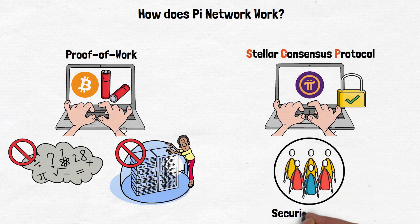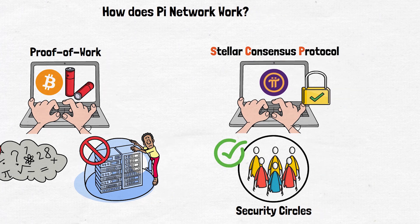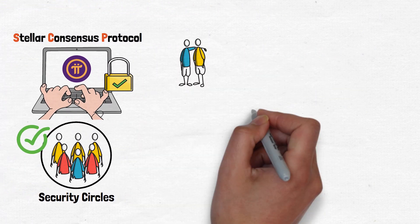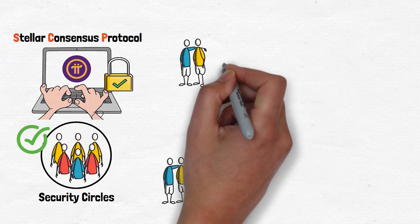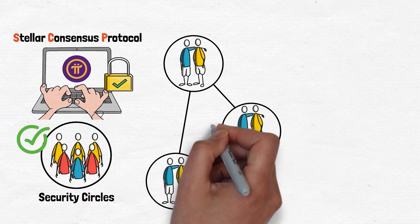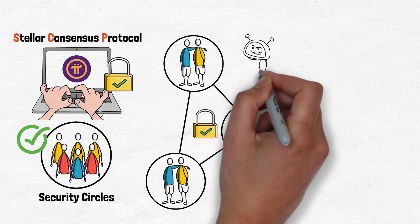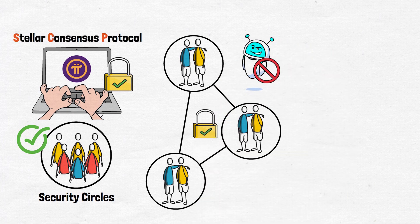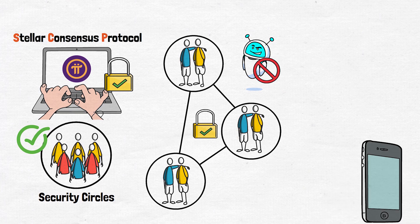When you join the Pi Network and invite trusted friends or family, you form these circles of trust. The idea is simple: members in your circle vouch for each other, ensuring the network stays secure while preventing fake accounts or bots from gaming the system. Because Pi is designed to be mobile-first, you can mine coins by simply pressing a button once a day in the app.